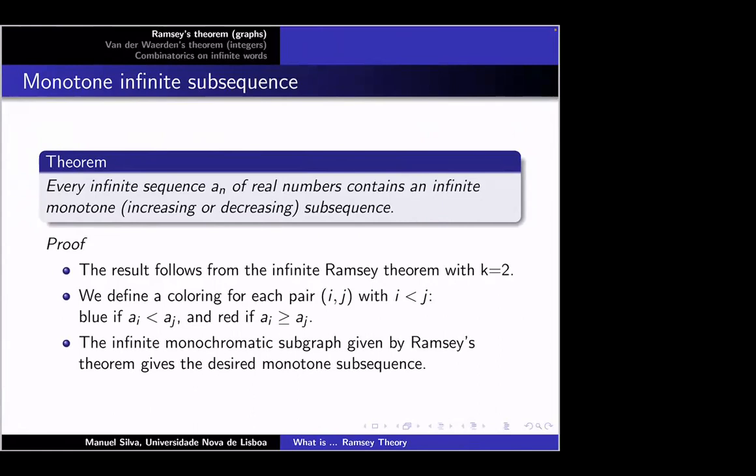Another simple example: we want to prove that every infinite sequence of real numbers contains an infinite monotone increasing or decreasing subsequence. The correct proof uses the Ramsey theorem with k equals two. We define a coloring for each pair of indices i < j: the color is blue if the order in the sequence is the same (a_i < a_j), and red otherwise. Applying the Ramsey theorem, the monochromatic infinite subgraph will be a monotone subsequence.